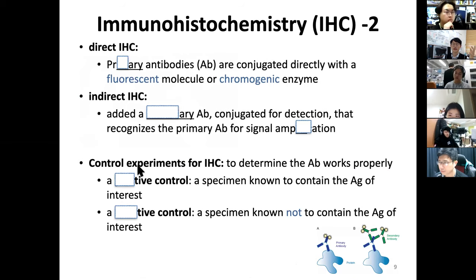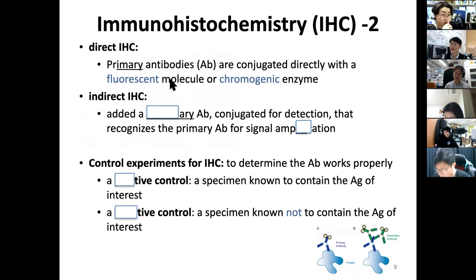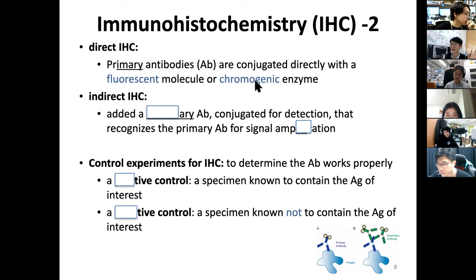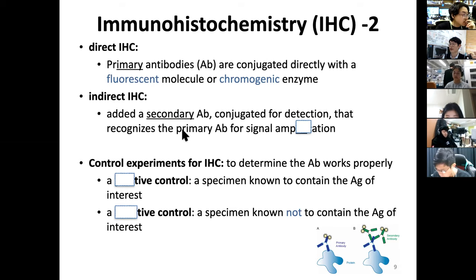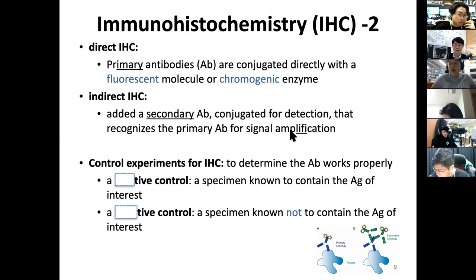We can distinguish between direct and indirect immunohistochemistry. In direct IHC, primary antibodies are conjugated directly with a fluorescent molecule or chromogenic enzyme — the dark brown pigmentation seen in the previous slide is chromogenic. In indirect IHC, a secondary antibody conjugated for detection is added; this secondary antibody recognizes the primary antibody and amplifies the signal.